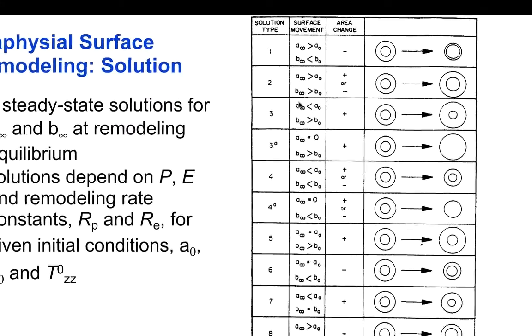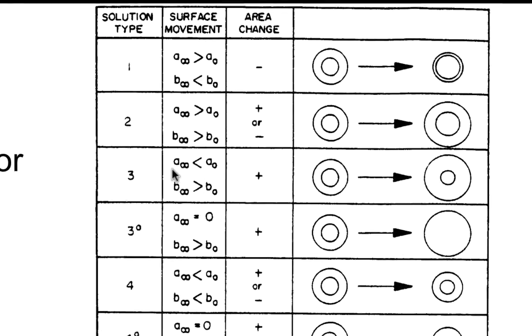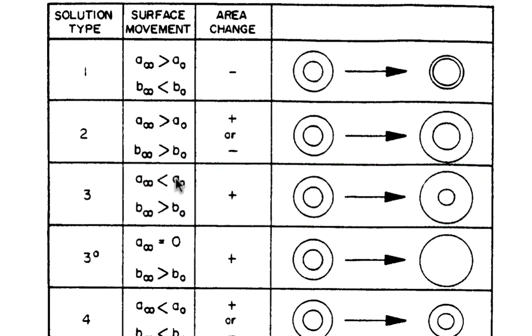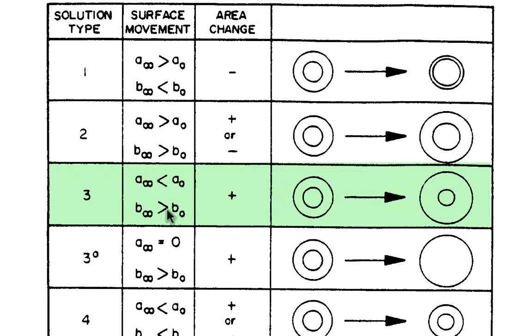Some of these solutions are fairly intuitive. For example, in this case three, a_∞ is less than a₀ and b_∞ is greater than b₀, resulting in an increase in cross-sectional area.